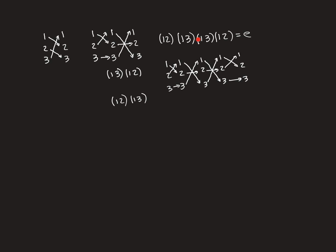If we take our original element and compose it with the new element obtained by reversing the order of transpositions, here is the pictorial representation. Even just looking at this, you can work out what happens: the composition of permutations is associative, so we can bracket and compose adjacent pairs. When you compose a transposition with itself, it becomes the identity — those effectively vanish. So (1,2)∘(1,2) and (1,3)∘(1,3) both give the identity.